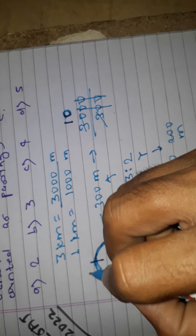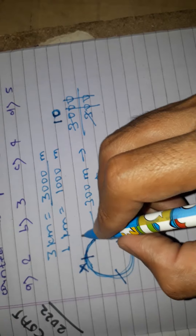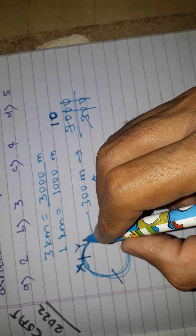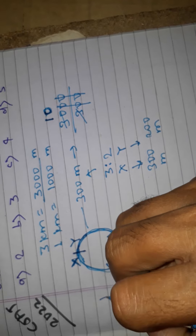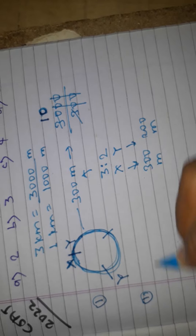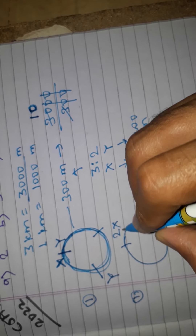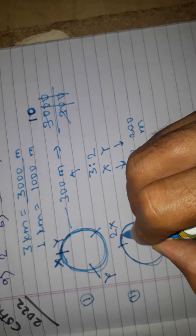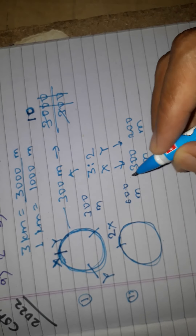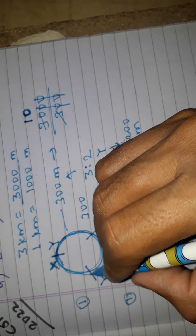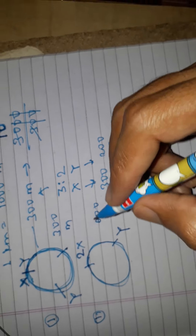In the first round, X runs 300 meters completing one full circle, while Y runs 200 meters — meaning Y is at the 200 meter mark. They do not meet in the first round. In the second round, X completes two circles covering 600 meters total. Y completes a second round, reaching the 400 meter mark — again they do not meet each other.